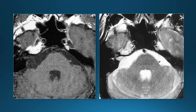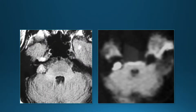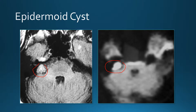Another lesion in the cerebellopontine angle on the right — dark on T1, bright on T2 — looks very similar to the arachnoid cyst we just saw. Except here on FLAIR the lesion is bright, and on diffusion it's also bright. So instead of an arachnoid cyst, we're dealing with an epidermoid cyst.